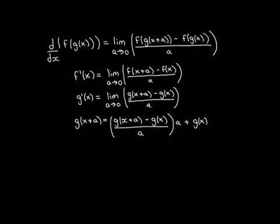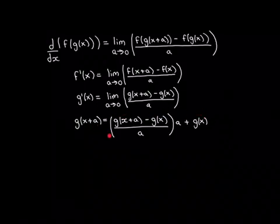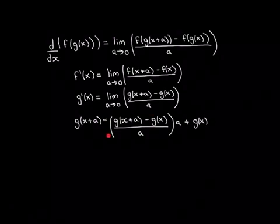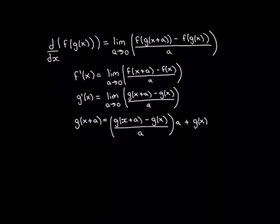Just as we did for the product rule, we're going to substitute in for g of x plus a. If you look at this: g of x plus a minus g of x over a, times a — that cancels to give g of x plus a minus g of x — and then adding g of x cancels the minus g of x, so the whole thing equals g of x plus a. We've taken this simple expression and rewritten it in a more complicated form that cancels back down, so we can substitute it in because we understand its structure in the limit.